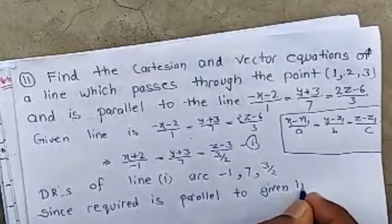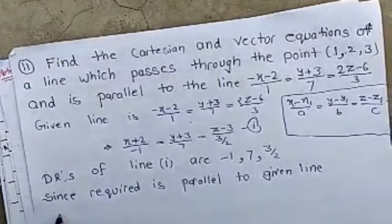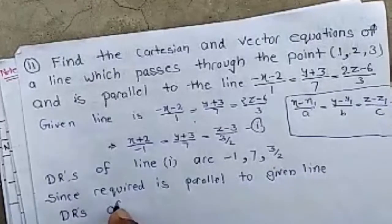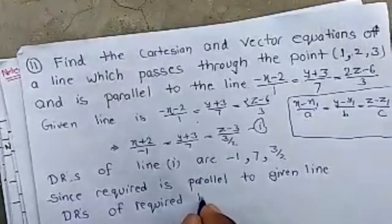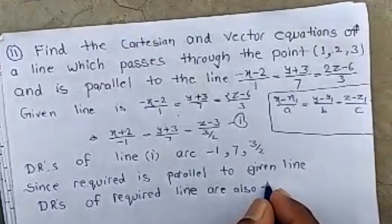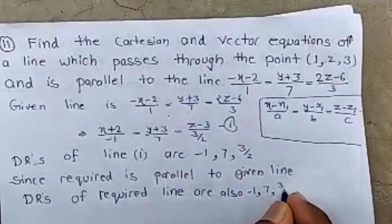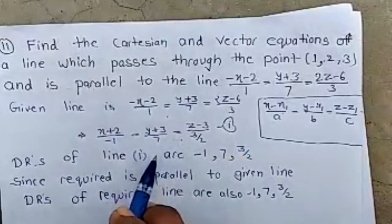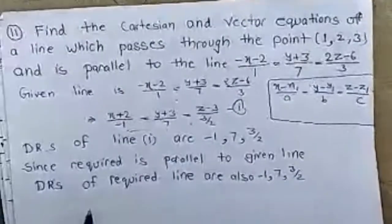Since the required line is parallel to the given line, and we know that direction ratios of parallel lines are equal or proportional, the direction ratios of the required line are also −1, 7, 3/2. Since the direction ratios of the given line are −1, 7, 3/2 and the required line is parallel to it, the direction ratios of the required line are −1, 7, 3/2.